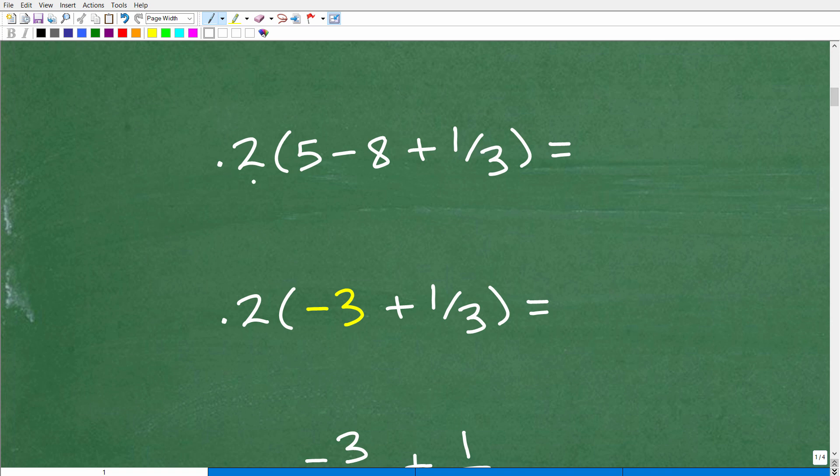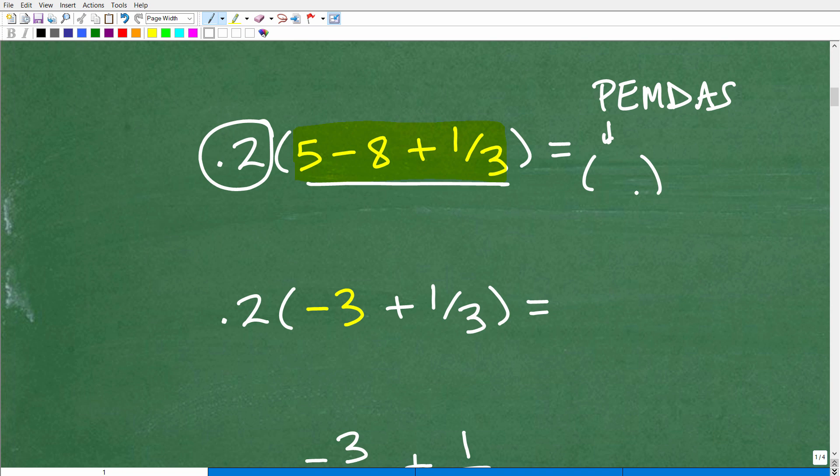All right, so let's go ahead and continue on our journey here by getting going with this problem. All right, so here we have 0.2, and then we have parentheses, 5 minus 8 plus 1 third. So we have to keep the order of operations in mind. We have to do all this stuff inside parentheses. So once we get this down to one value, then we'll multiply by 0.2. So you have to recall the order of operations, which is this nice little mnemonic, a little memory aid. P stands for parentheses. We've got to do everything inside parentheses.